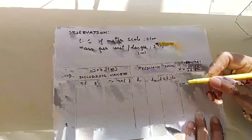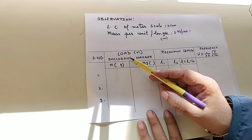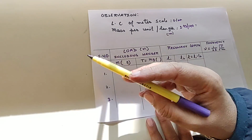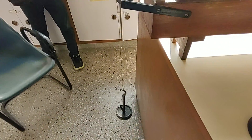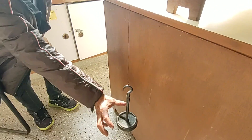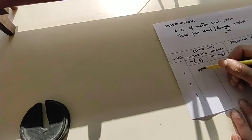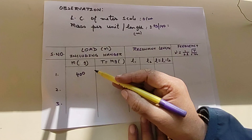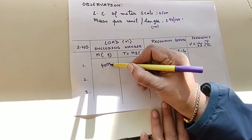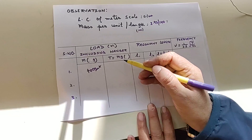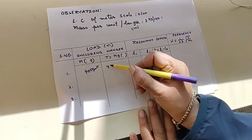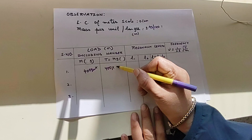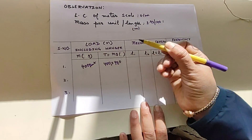We calculate mass per unit length, denoted by small m. For the load: the hanger plus two slotted weights of 200 grams each gives a total load of 400 gram-weight. To find the tension in dynes, multiply 400 by 980.